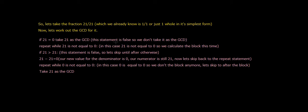Repeat while 21 is not equal to zero. In this case, 21 is not equal to zero, so we calculate the block this time. If 21 is more than 21, this statement is false, so let's skip until after otherwise. 21 minus 21 equals zero. Our new value for the denominator is zero. Our numerator is still 21.